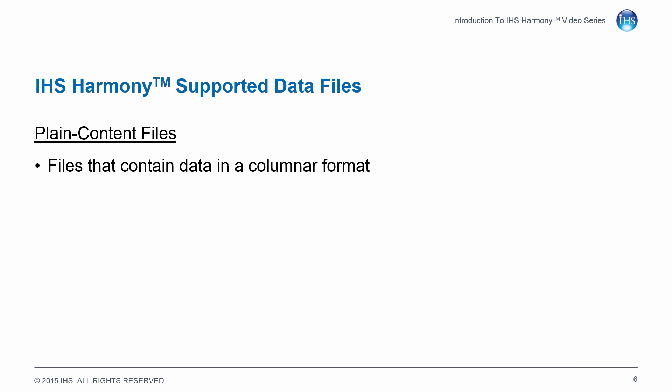A plain content file is a file that contains data in a columnar format. Harmony is not able to automatically identify the various data types contained within this file, and requires that during the import you identify each column of data to be imported. These plain content files are used to import production and attribute data into a Harmony project.